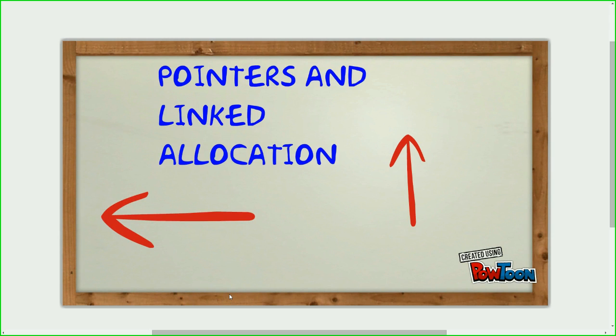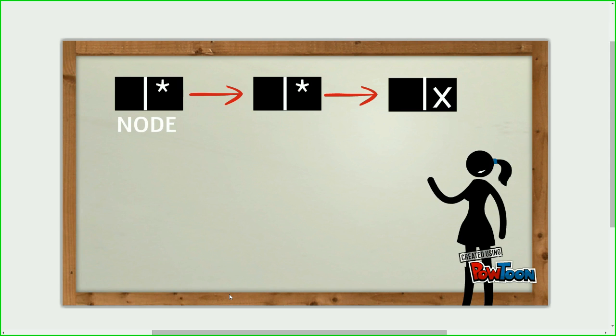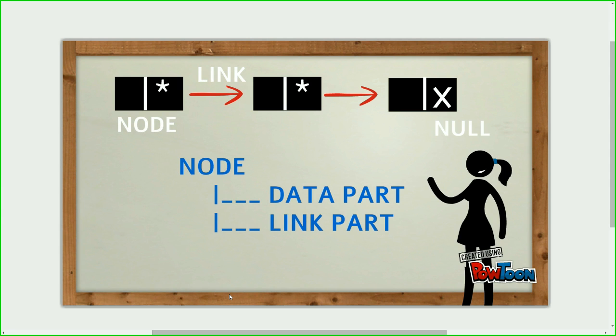Pointers and linked allocation. In this, values are linked with each other with the help of pointers. Every linked list has nodes and links. Node has a data part which contains data and link part which contains address. The cross shows null because it's the last node of the list and each link part thus points to nothing.